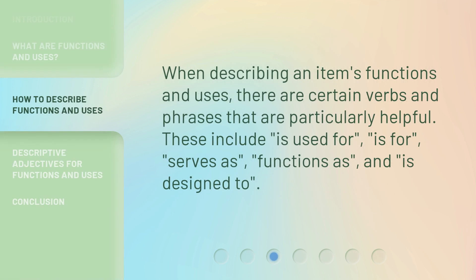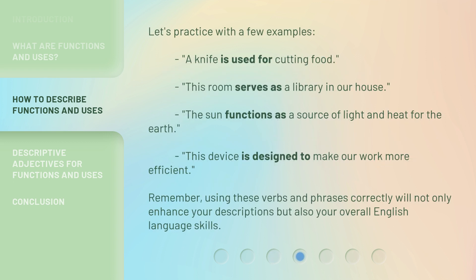When describing an item's functions and uses, there are certain verbs and phrases that are particularly helpful. These include: 'is used for,' 'serves as,' 'functions as,' and 'is designed to.' Let's practice with a few examples. A knife is used for cutting food. This room serves as a library in our house. The sun functions as a source of light and heat for the earth. This device is designed to make our work more efficient. Remember, using these verbs and phrases correctly will not only enhance your descriptions, but also your overall English language skills.